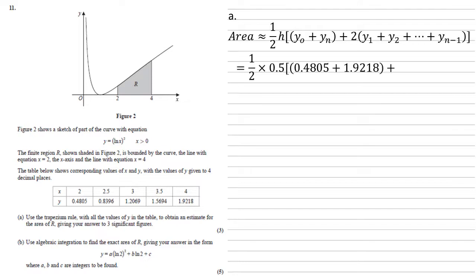So putting our numbers in, we get a half times 0.5 for the interval gap between 2, 2.5, 3 and so on, times by our first and last y values added together. So 0.4805 and 1.9218 plus two lots of the sum of the other y values, so 0.8396, 1.2069, and 1.5694. Putting all of this into the calculator gives us an answer of 2.41.